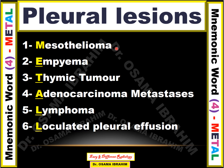M is from mesothelioma. E is from empyema. T is from thymic tumors, which cause direct invasion of the pleura. A is from adenocarcinoma metastasis — associated with other features of metastasis like bone lesions, lung nodules, or lymphangitic carcinomatosis. L is from lymphoma, or loculated pleural effusions, as we see in the previous slides. Lymphoma can also cause mass lesions in the pleura.